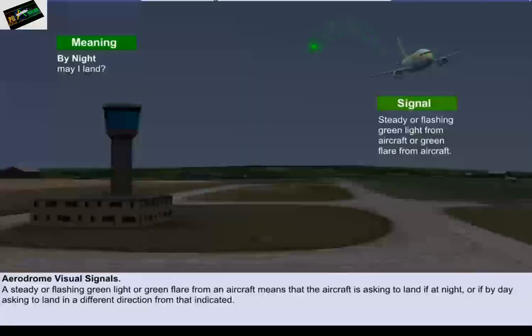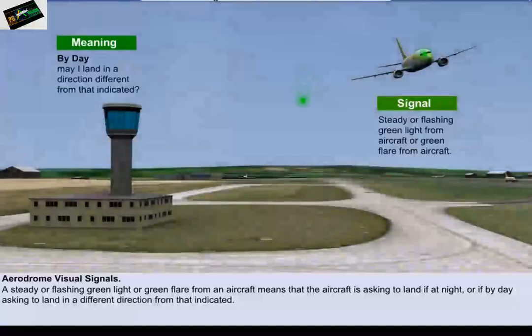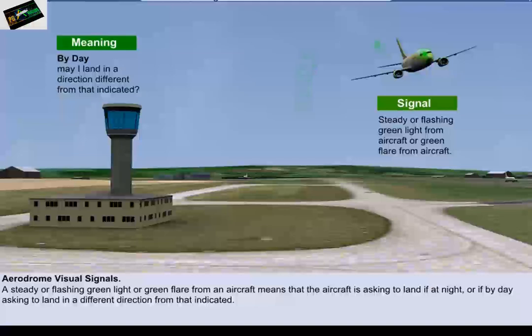A steady or flashing green light or green flare from an aircraft means that the aircraft is asking to land if at night or, if by day, asking to land in a different direction from that indicated.